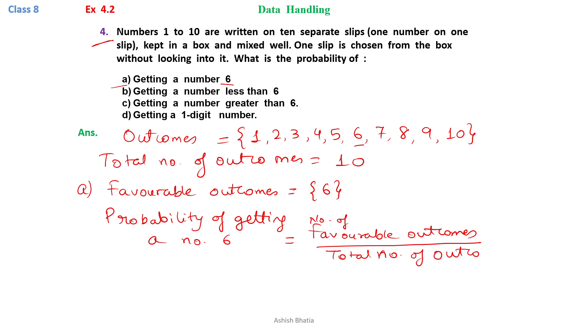number of favorable outcomes upon total number of outcomes. Here we see that number of favorable outcomes is only 1, because only one card has number 6. And total number of outcomes are 10. So probability to get a number 6 equals 1 by 10.